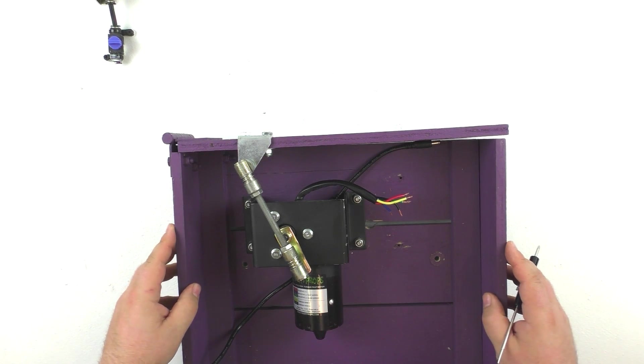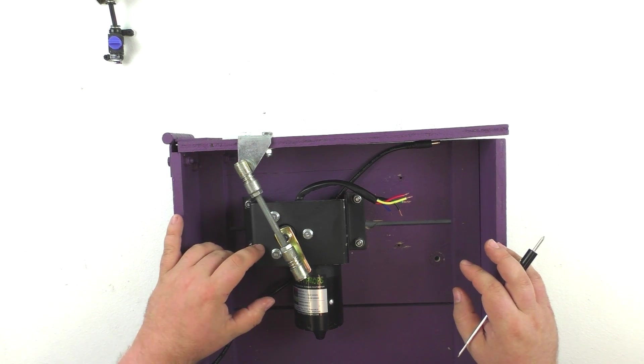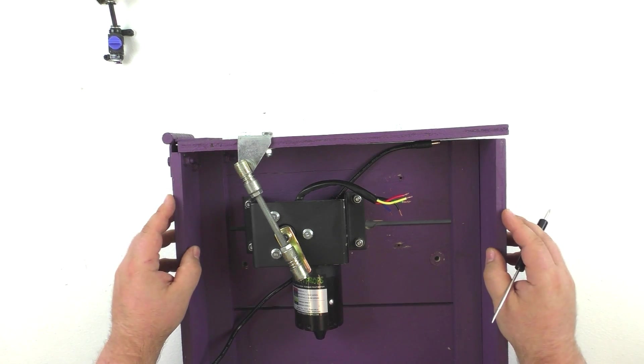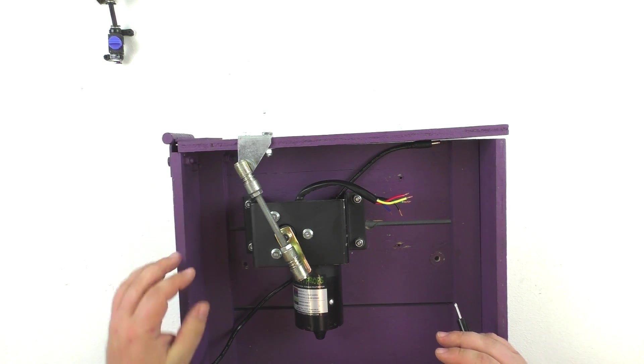Hey guys, Scott from Fright Props here, and today we're going to be taking a look at our electric lid opener mech. The electric lid opener mech is designed to mount inside of a crate or a coffin, anything with a hinged lid, and open and close that lid.